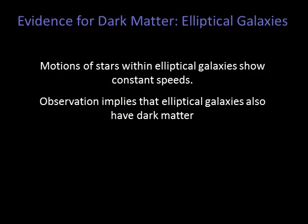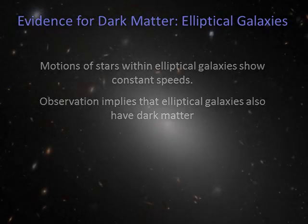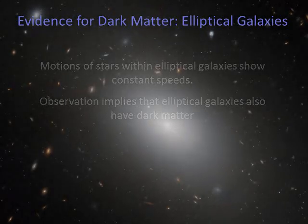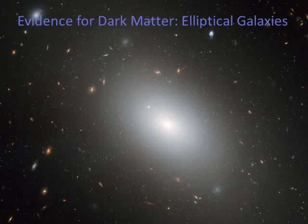We also see evidence for dark matter in elliptical galaxies. By studying absorption lines of elliptical galaxies, astronomers can determine how fast the stars in these galaxies are moving. It turns out that the speeds of stars remain fairly constant from the center of the elliptical galaxies to the edges, just as with the spirals. It appears ellipticals also have dark matter.